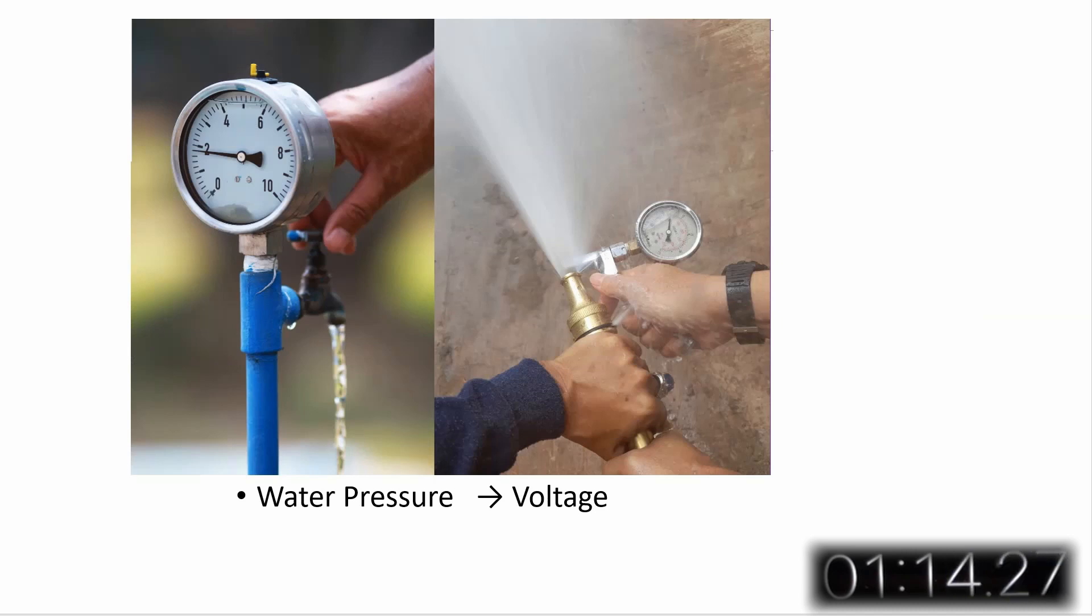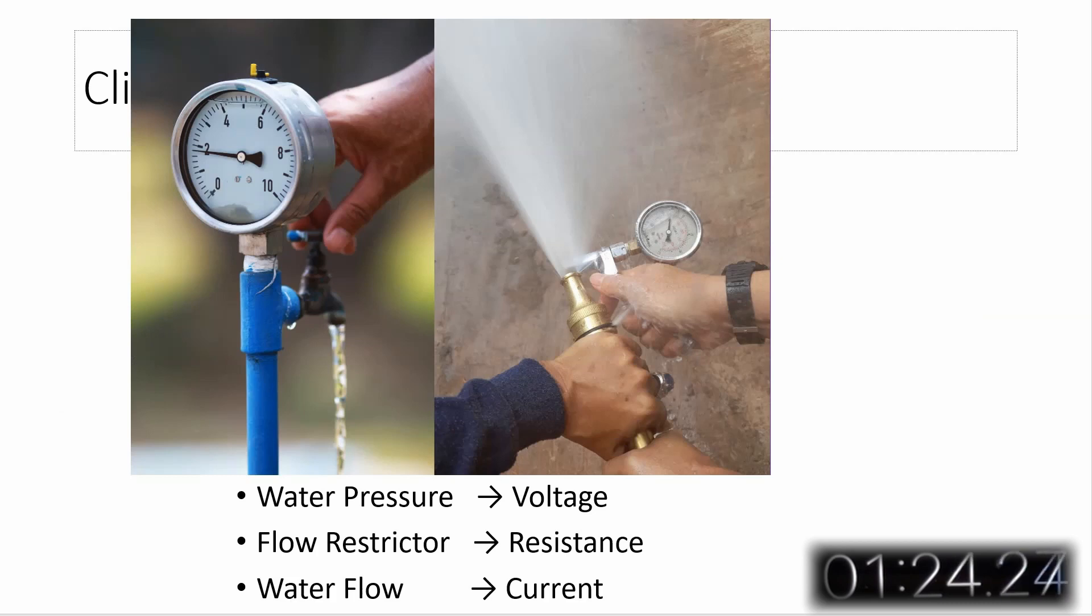One way to think of the relationship between voltage, current, and resistance is to use a water analogy, where voltage is analogous to water pressure, resistance is analogous to flow restrictors in a pipe, and current is analogous to water flow. For a given flow restrictor,